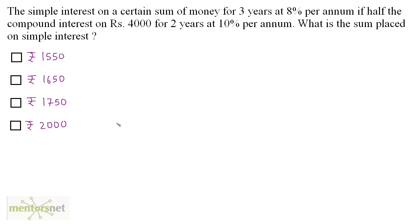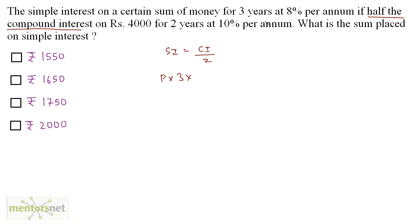The simple interest on a certain sum of money for 3 years at 8% per annum is half the compound interest on Rs.4000 for 2 years at 10% per annum. What is the sum placed on simple interest? It is said that simple interest equals CI by 2. The formula for simple interest is PNR upon 100, where P is what we have to find. So P times 3 times 8 upon 100 equals half the compound interest.